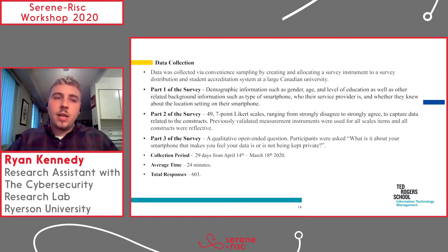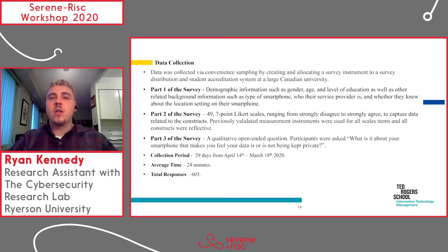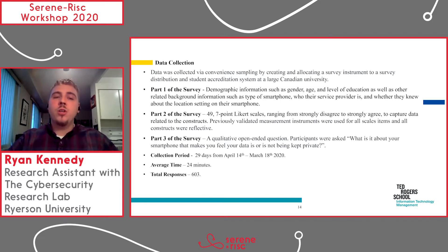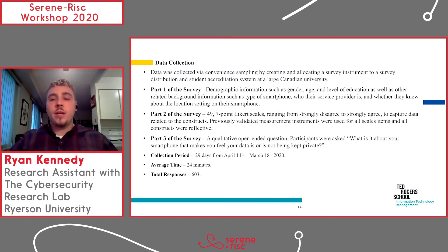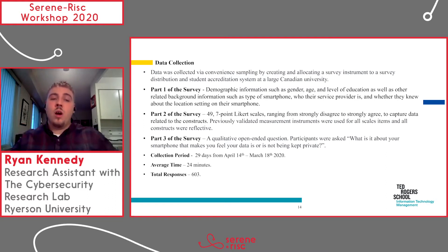One survey instrument was used to collect data for both sides of the analysis. We surveyed a large Canadian university and had three parts to the survey. Part one is general demographic information, as well as questions used to filter out improper respondents — for example, those who don't know how to use the location on their phone. Part two was 49 Likert scales to capture all the variables discussed. Part three was the qualitative open-ended question: 'What is it about your smartphone that makes you feel that your data is or is not being kept private?' It gave respondents the opportunity to explain both why they feel safe and why they do not.